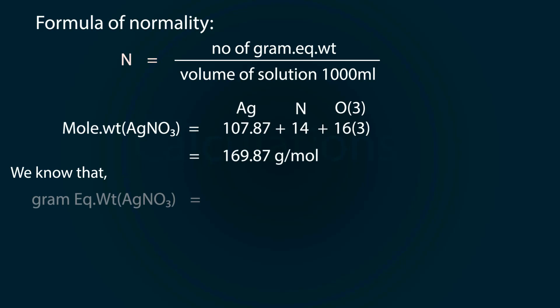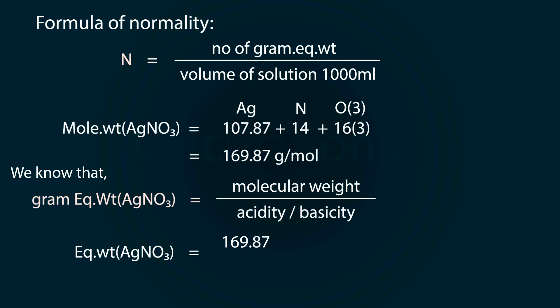We know that gram equivalent weight equals molecular weight divided by acidity or basicity. So equivalent weight equals 169.87 divided by 1 because acidity of silver nitrate is one. So gram equivalent weight is 169.87 grams.